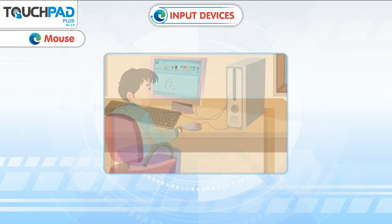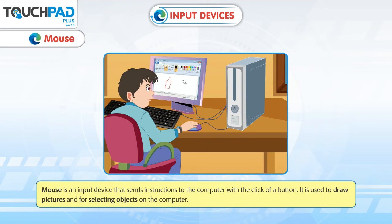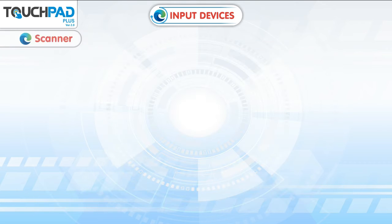Mouse. A mouse is an input device that sends instructions to the computer with the click of a button. It is used to draw pictures and for selecting objects on the computer.